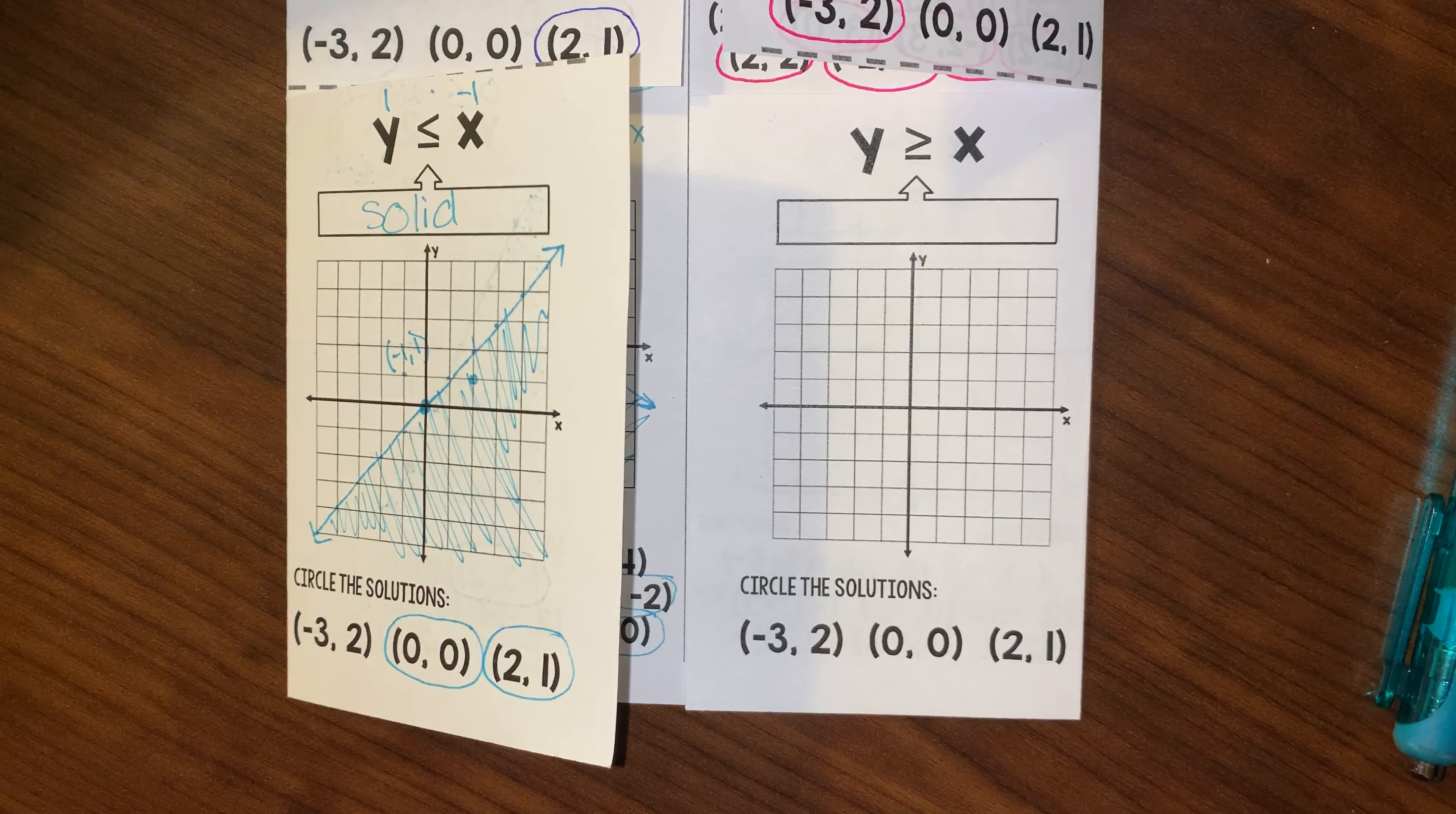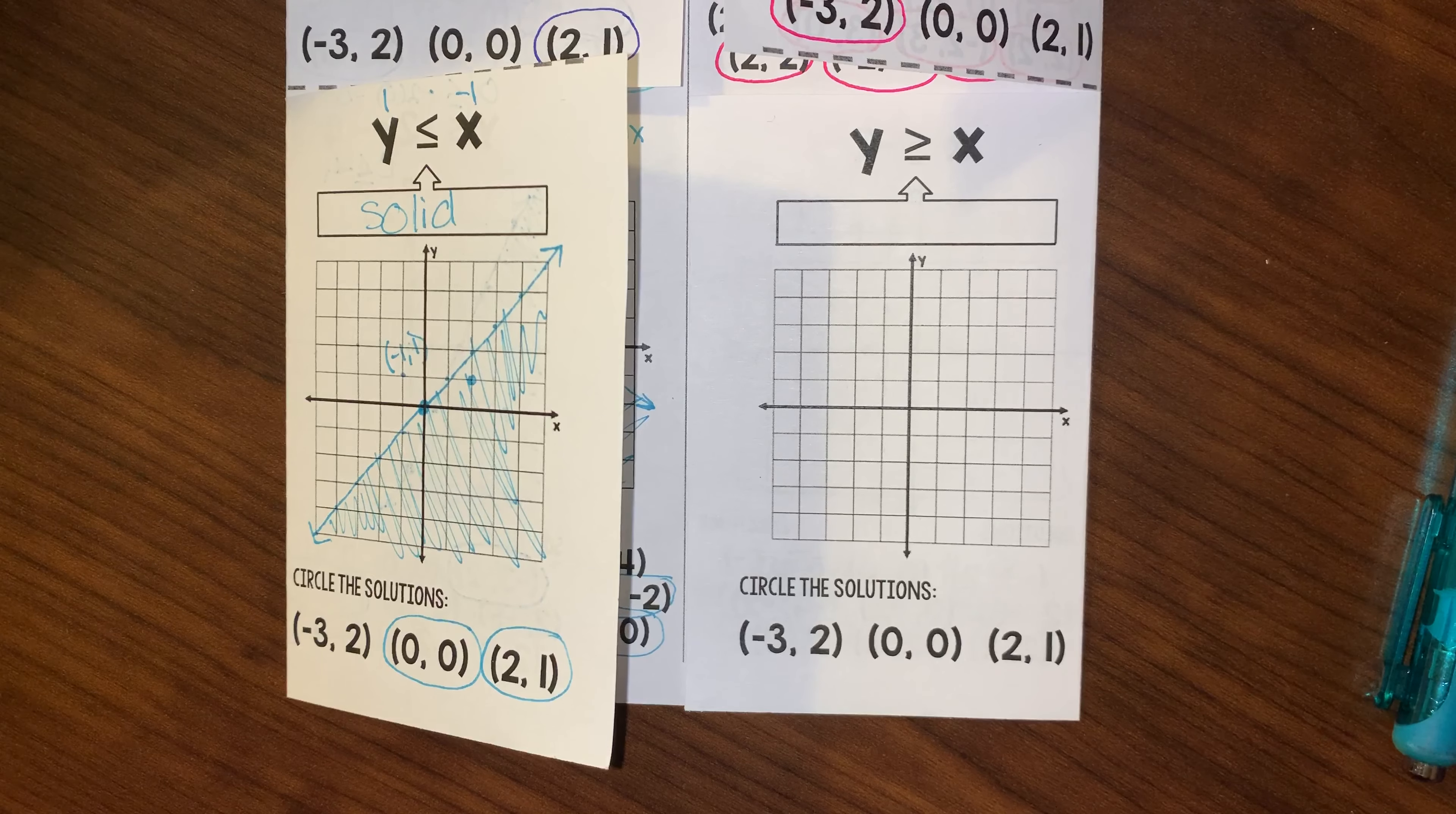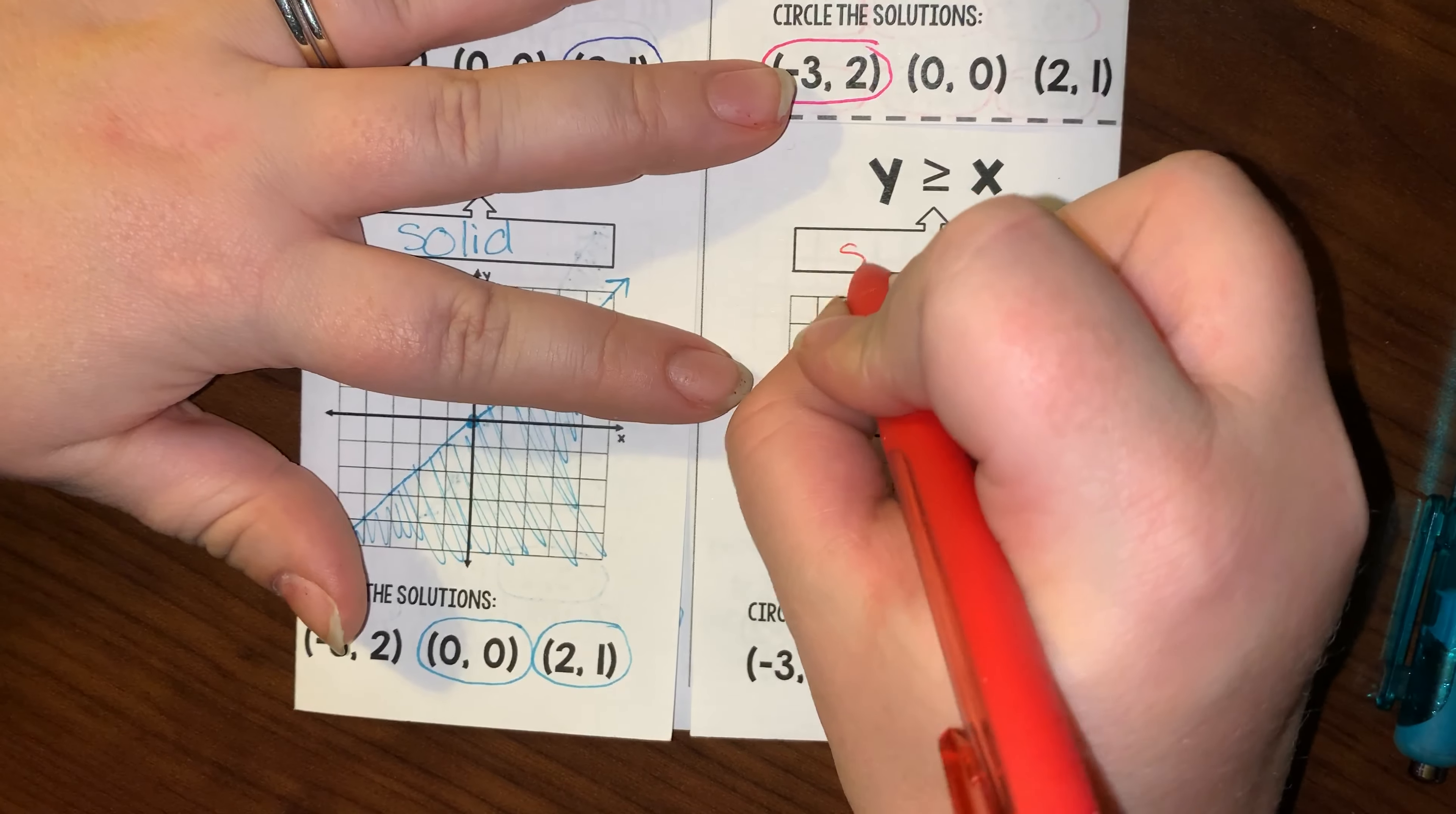For this last example, we have y is greater than or equal to x, so because it could equal x, this means that we are going to have a solid line.